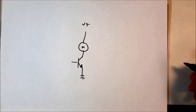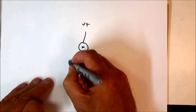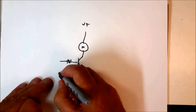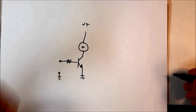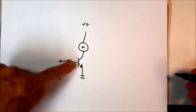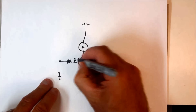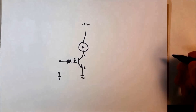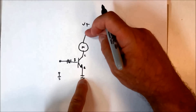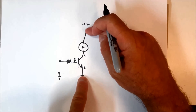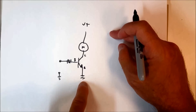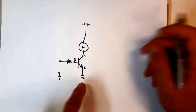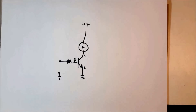We call it a common emitter configuration because our input is applied between the base and the emitter, and our output is obtained between the emitter and V+ or the collector. So the emitter is common to both the input and the output — this is why we call this a common emitter.